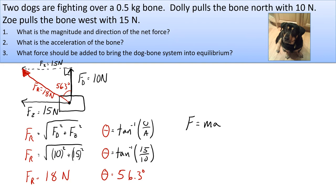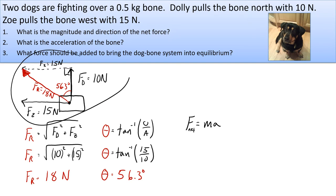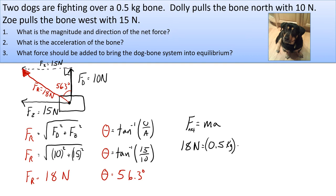We use the subscript F net, or sigma F. In all the previous problems there was only one force, so you didn't need this process. But now we use the resultant force: 18 newtons equals 0.5 kilograms times acceleration, giving us 36 meters per second squared.